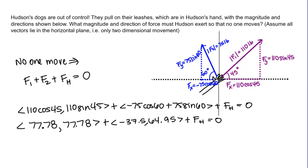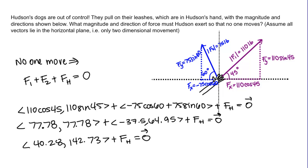I can add these first two vectors. Doing that gives (40.28, 142.73) plus Hudson's force equals zero — and this is the zero vector; these are all vectors. So FH is just going to have to be the negatives of those components: (−40.28, −142.73). We have the vector, but we want to find its magnitude and direction as an angle.